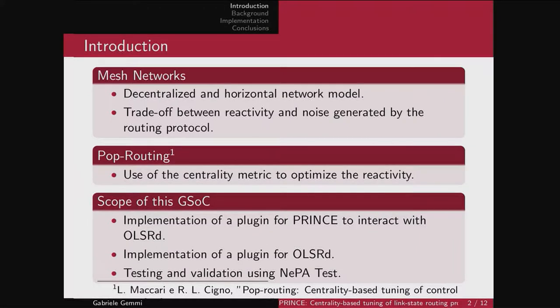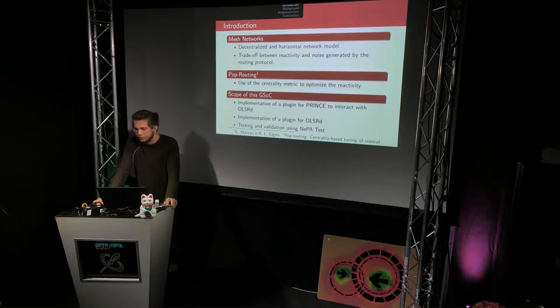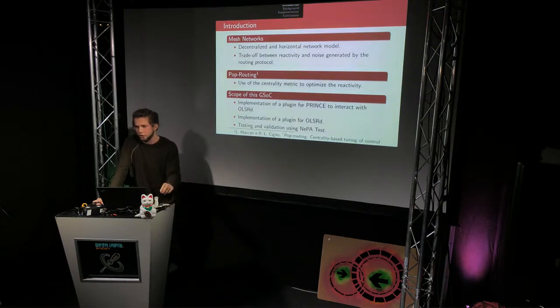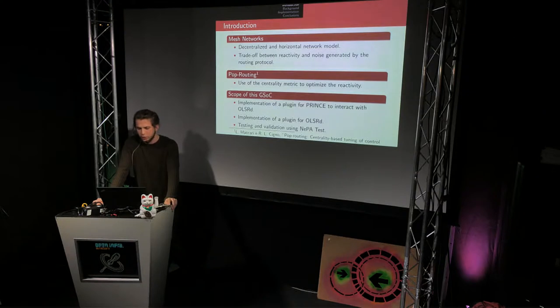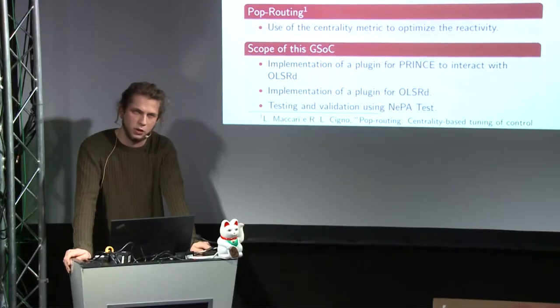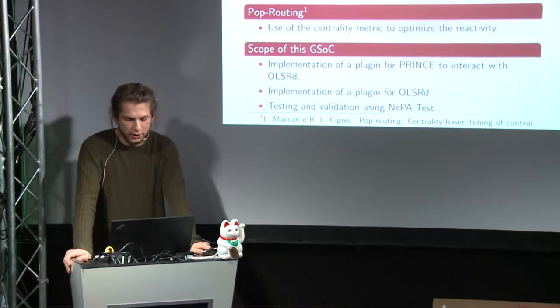In mesh networks we have to find a trade-off between the reactivity of the network and the overhead generated by the routing protocol. If we want a reactive network we'll have higher overhead because of many messages generated by routers. Using pop routing, we use the centrality metric to configure on each node a specific timer for reactivity. In this GSoC we implemented pop routing using Prince on OLSR. Last year we implemented it with OLSRv2 and also implemented a plugin for OLSR to update these timers, and tested everything using NEPA test.